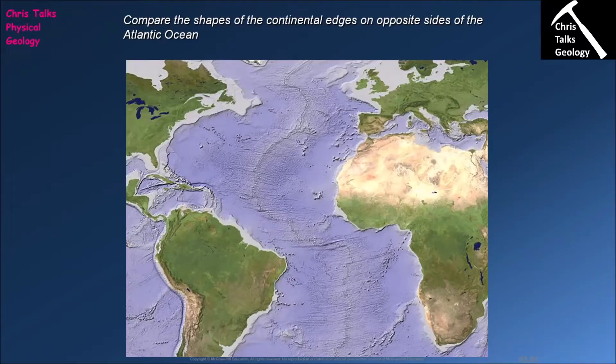Hello everybody, this is Dr. Christopher White and we're going to be continuing with our lecture on the theory of plate tectonics. We're going to begin looking at some of the evidence which was used to propose the theory of plate tectonics, or more accurately continental drift, which is what it was called at the time.